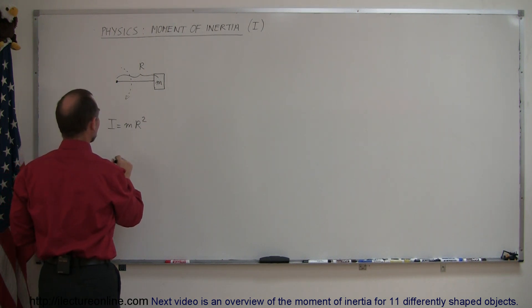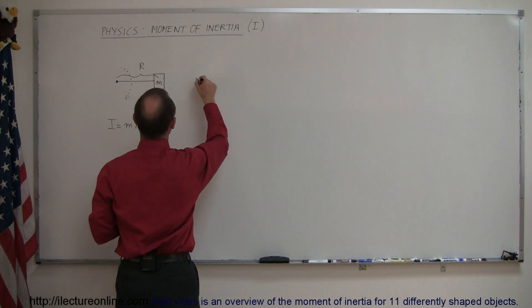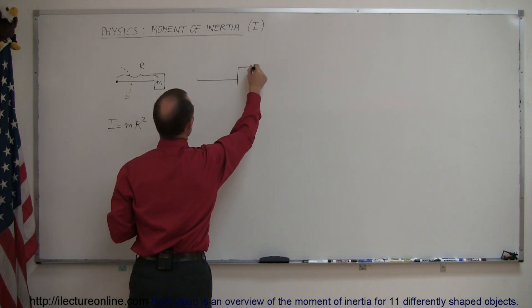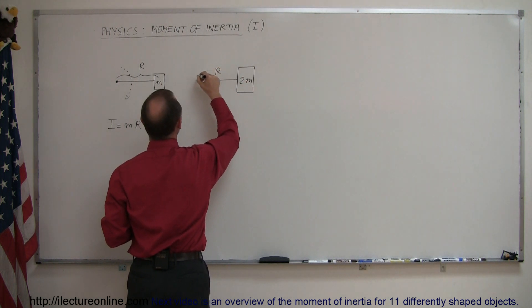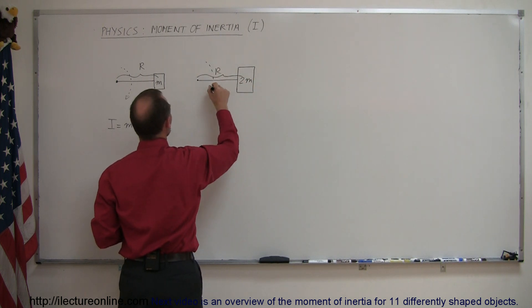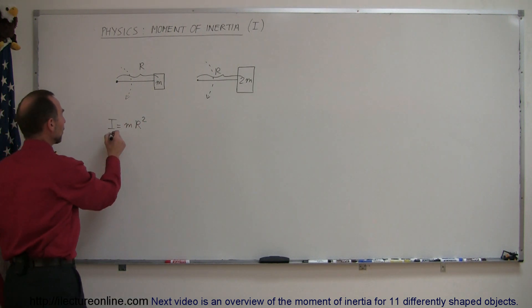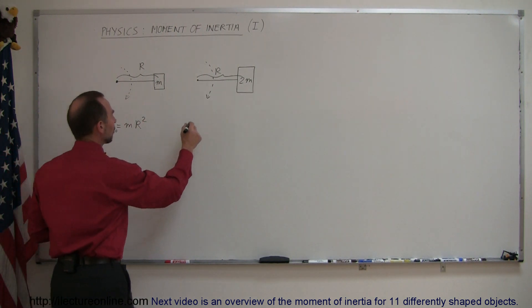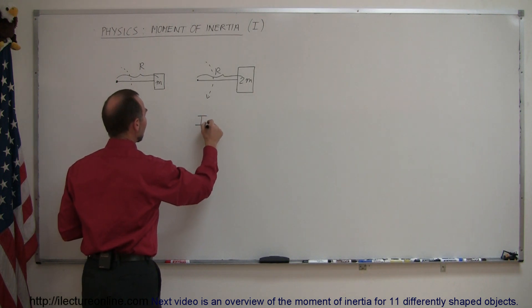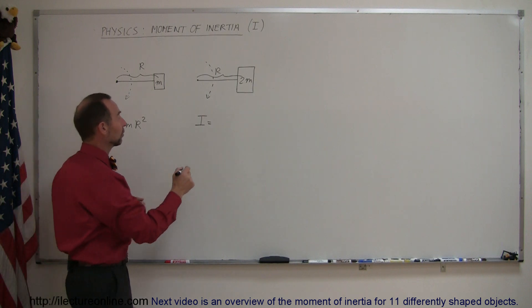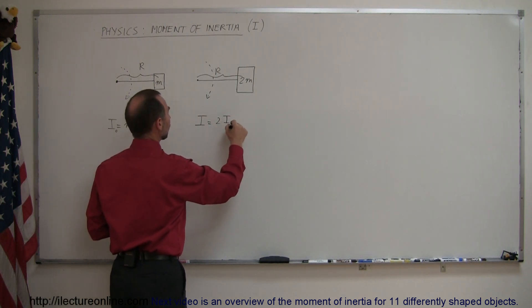For example, if I had something like this where I have twice the mass as before, 2m, and the distance is still r, so this is still the radial distance, and this thing can rotate, so now we have twice the mass. What is the moment of inertia now? If this was the initial moment of inertia, what is the moment of inertia now? So I is now equal to, since the mass is doubled, it would now be twice the original moment of inertia, I initial.